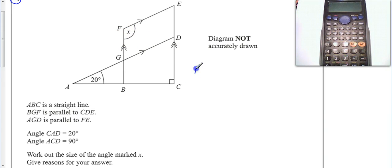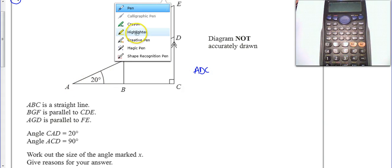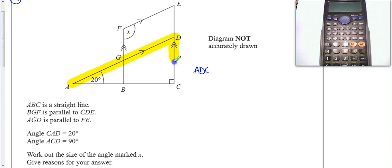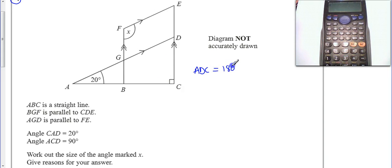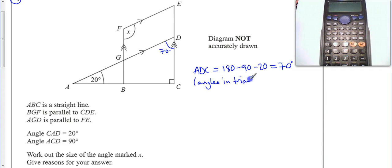I'm going to write — I'm going to use the abbreviations — and I'm going to calculate angle ADC, so from A to D to C, this angle up in here. I'm going to do that by: well, it's in a triangle, so 180 minus 90 minus 20, and that's going to be 70 degrees. I'll label that on my diagram as 70 degrees. The reason: angles in a triangle equal 180 degrees. So I'm explaining why I'm working as I go along.